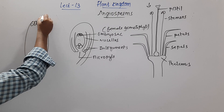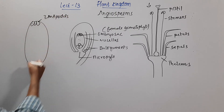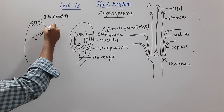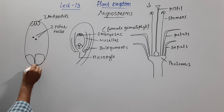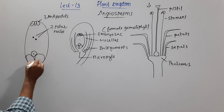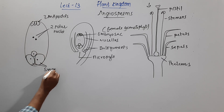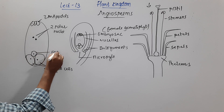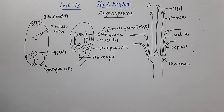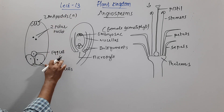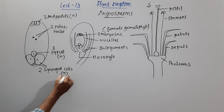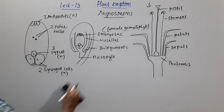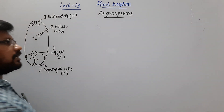Inside the embryo sac there are three antipodals, two polar nuclei, two synergid cells, and one egg cell. All these cells — the antipodals, the synergids, and the egg cell — are haploid. There is only one egg cell, which is also haploid.